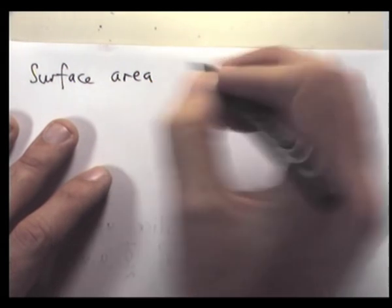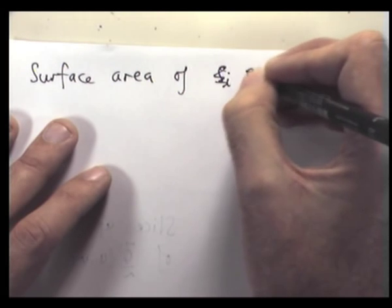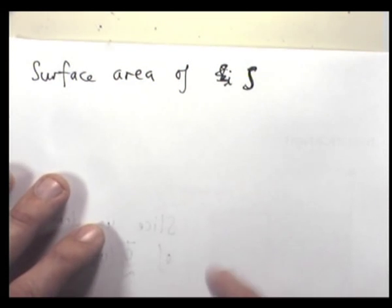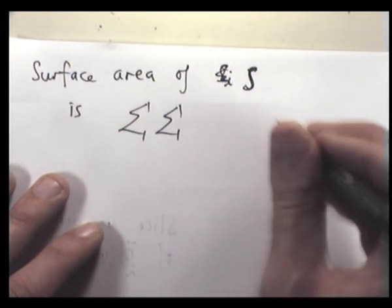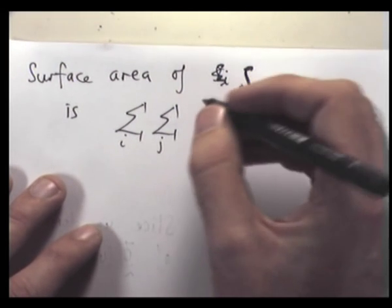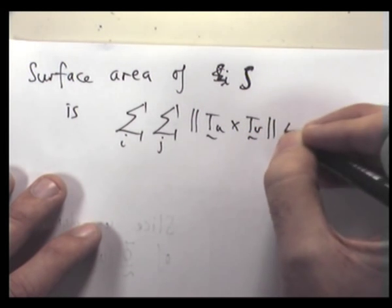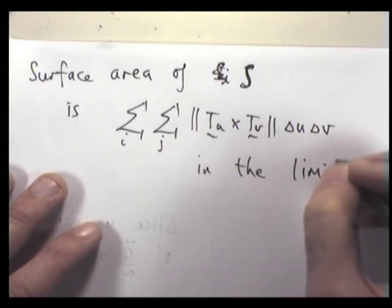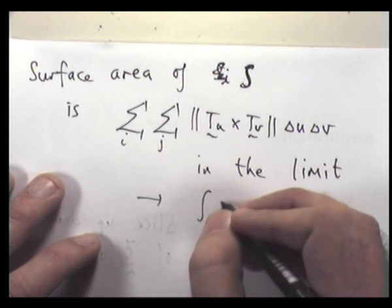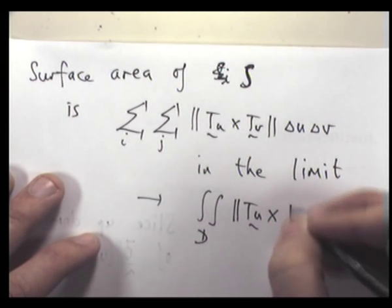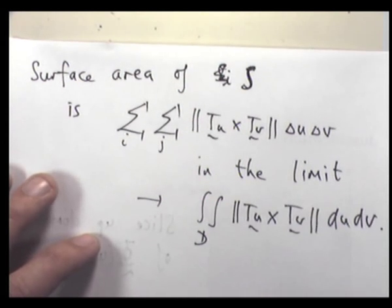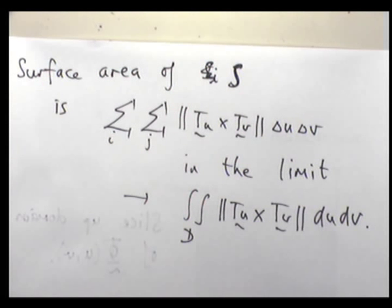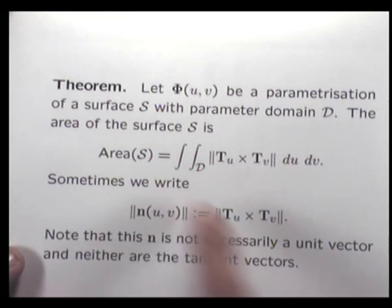The surface area of S — it's the slice-and-sum technique that you know. We end up with what we wanted.